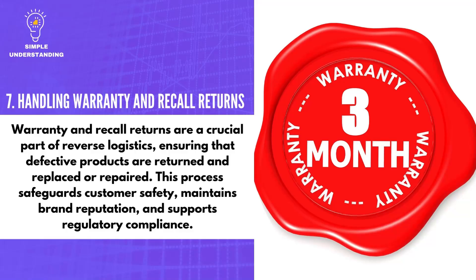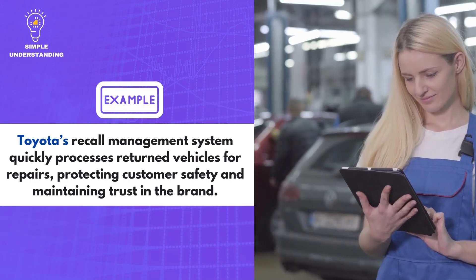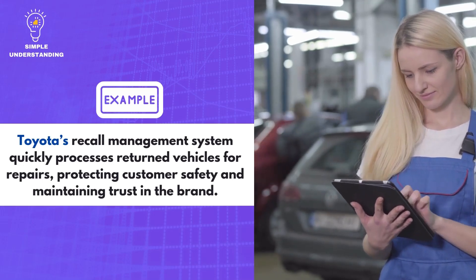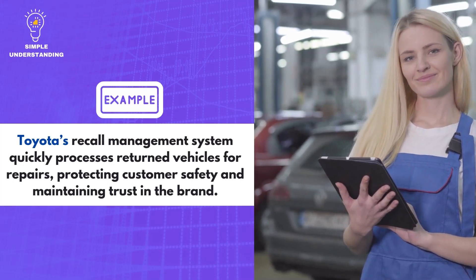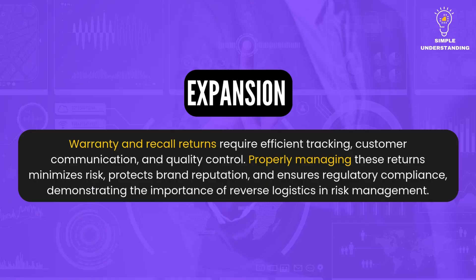7. Handling Warranty and Recall Returns. Warranty and recall returns are a crucial part of reverse logistics, ensuring that defective products are returned and replaced or repaired. This process safeguards customer safety, maintains brand reputation, and supports regulatory compliance. Toyota's Recall Management System quickly processes returned vehicles for repairs, protecting customer safety and maintaining trust in the brand. Warranty and recall returns require efficient tracking, customer communication, and quality control, minimizing risk and ensuring regulatory compliance.